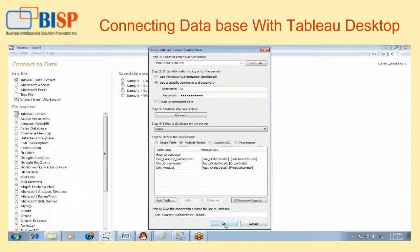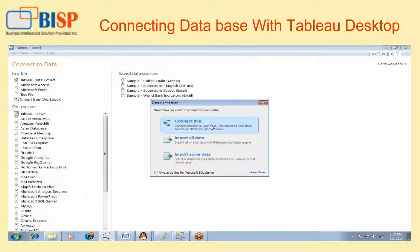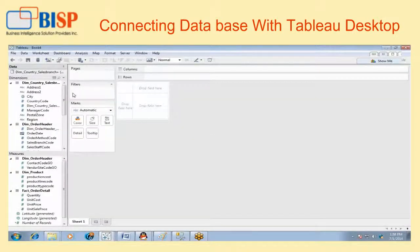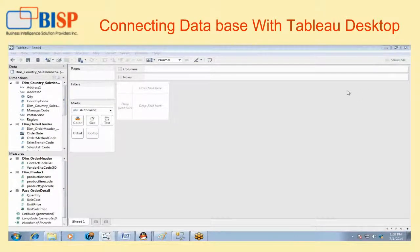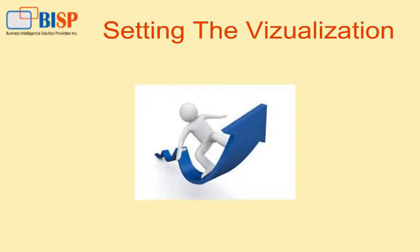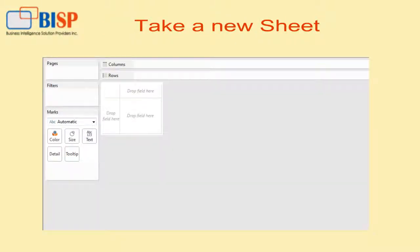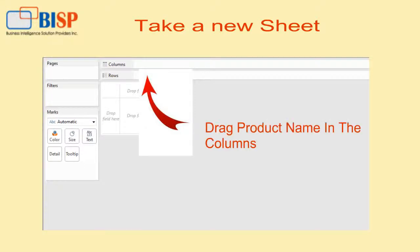Click OK and choose the connection type 'live'. This will explore all the data in Tableau Desktop, which can be used for making reports. The same page will be seen on the table.